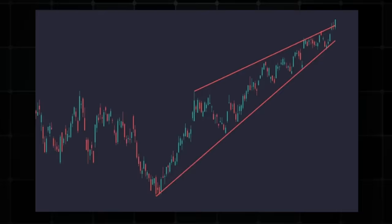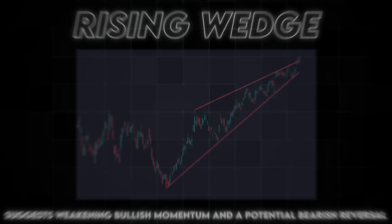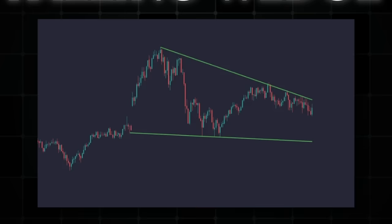Next we have the famous rising and falling wedges. I used them at the beginning of my trading but found no success in them, so I don't use them. A rising wedge is a bearish pattern formed by converging upward trend lines — despite rising prices, the narrowing of the pattern suggests weakening bullish momentum and a potential bearish reversal. A falling wedge is the complete opposite — a bullish pattern with converging downward trend lines where price slows down, indicating a weakening bearish trend and a potential bullish reversal.